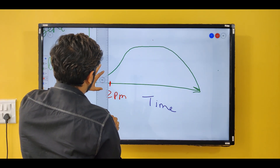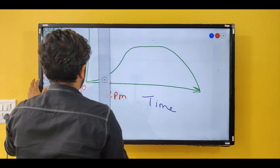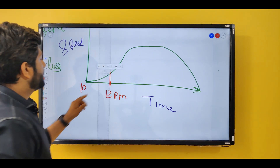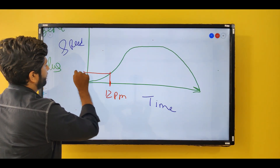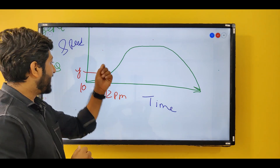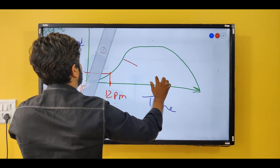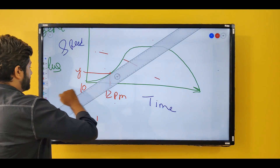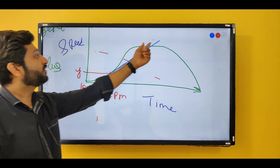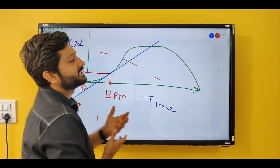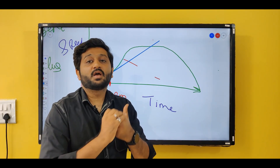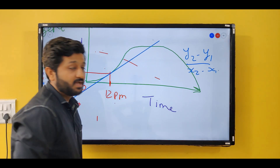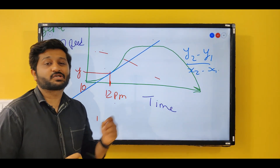At 12 p.m. I draw a tangent at that point. A tangent is a line which intersects a curve at a single point. The tangent is a straight line, so I can easily find its gradient using the formula (y₂ - y₁) / (x₂ - x₁). But there are a couple of problems associated with this method.